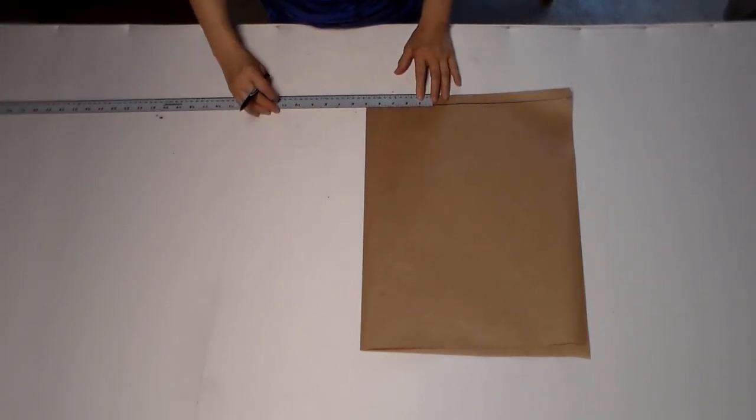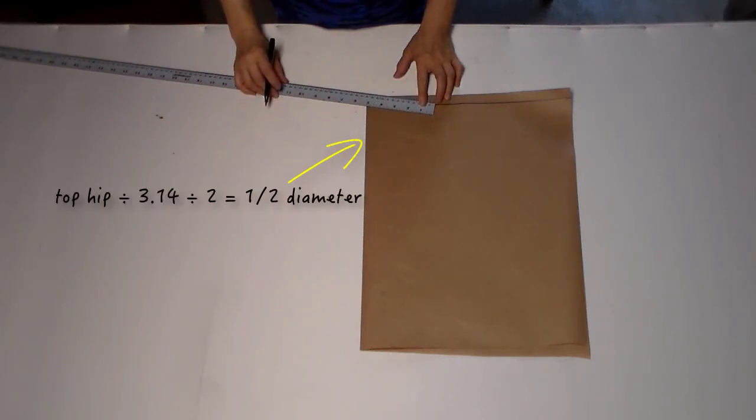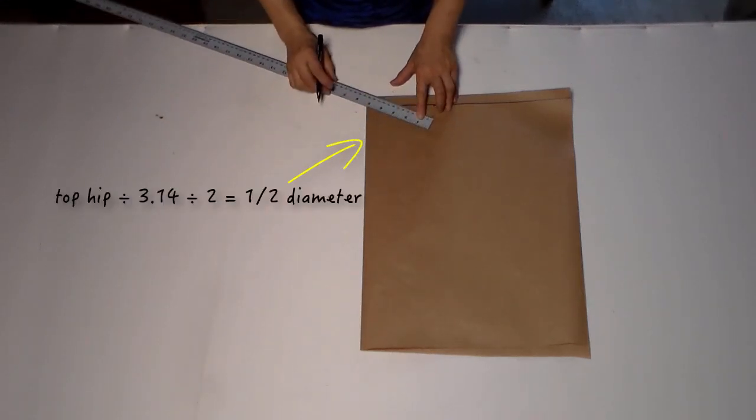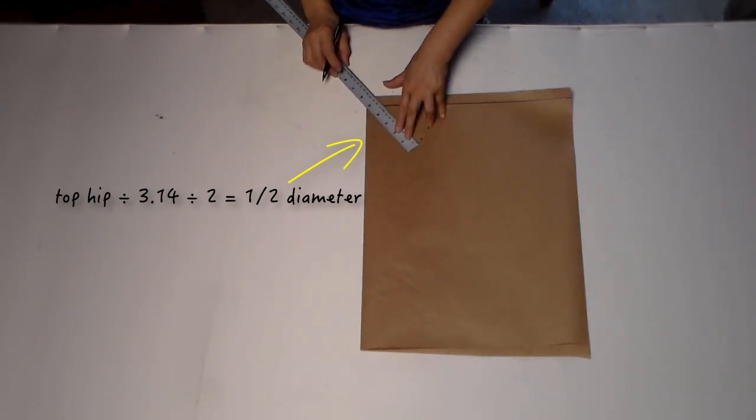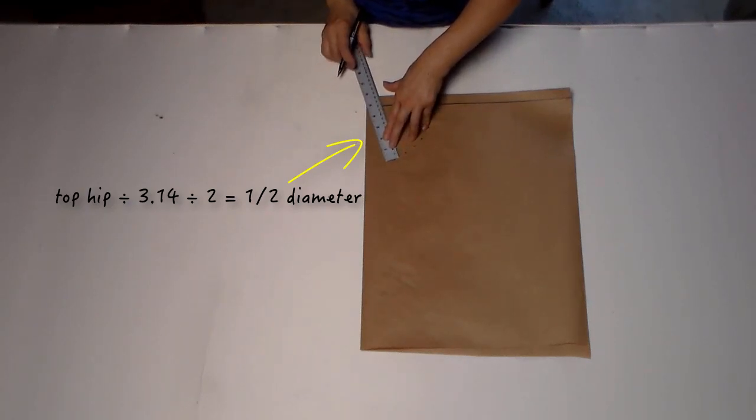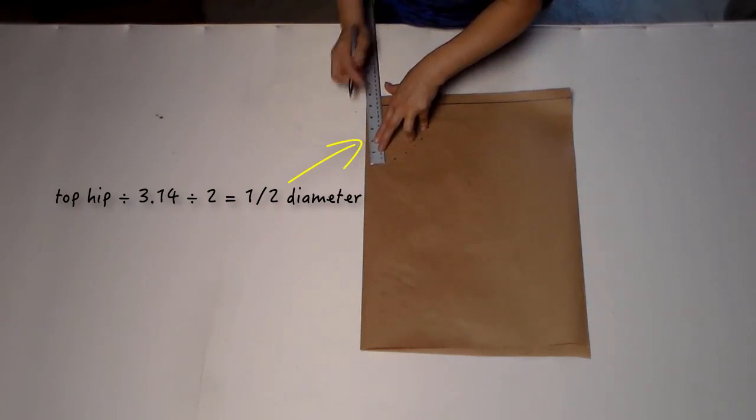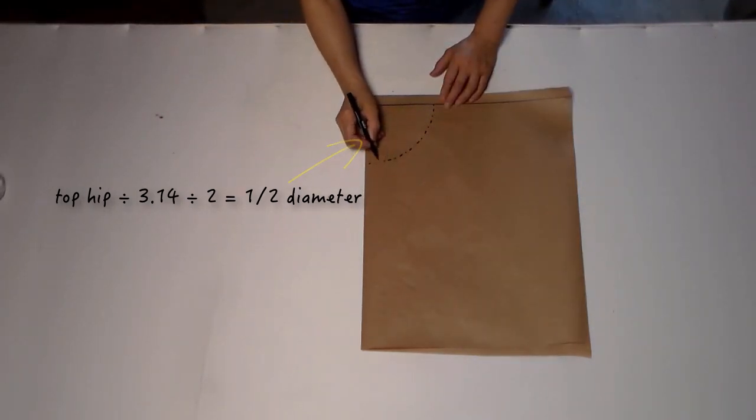I will use 5 inches for half diameter, but your number may be different because each person has a different size. Where does this come from? It comes from your top hip measurement divided by 3.14 and divided by 2, so you get half of the diameter.